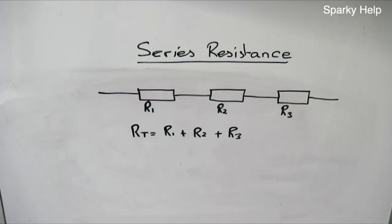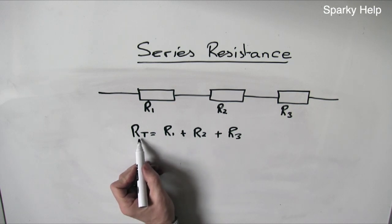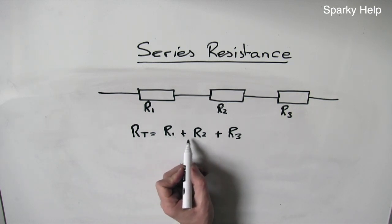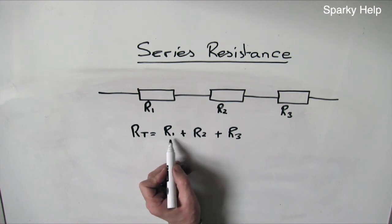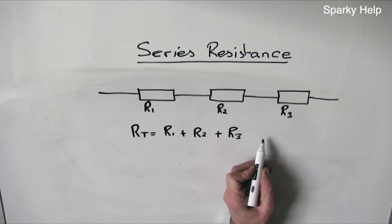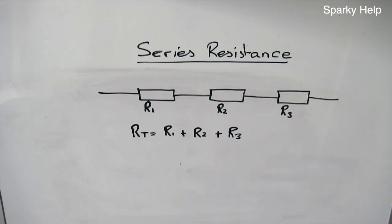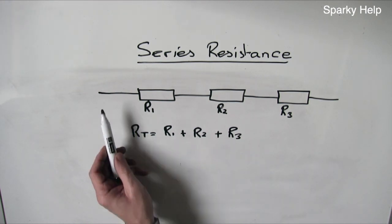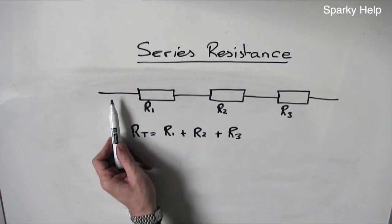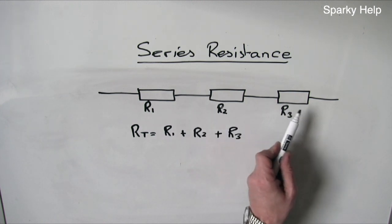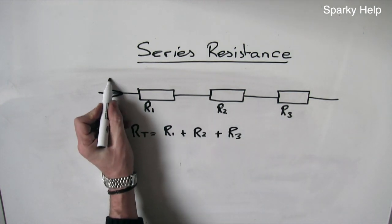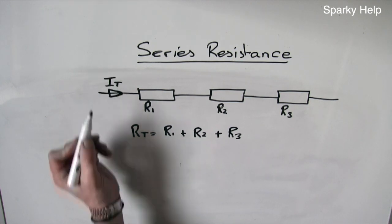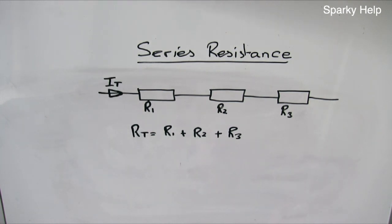In summary, for a series circuit, RT is always going to be bigger than the biggest resistor in the circuit. Therefore, RT is equal to R1 plus R2 plus R3, etc. In a series circuit, there is only ever one current that will flow, which we show by putting an arrow and then identifying that current.